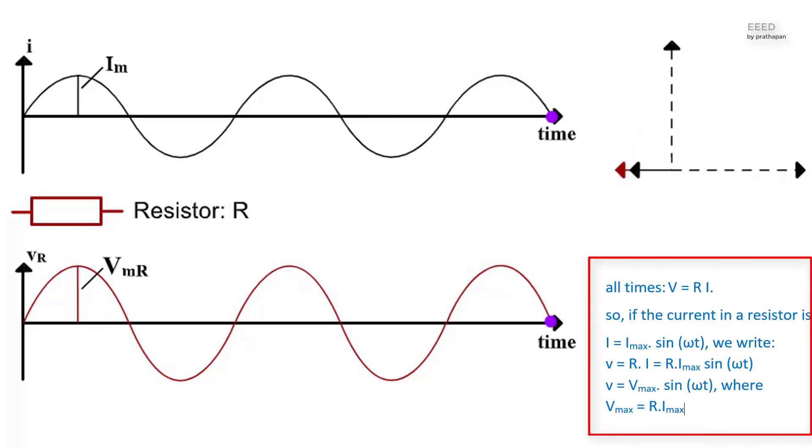Further, this is true at all times: V equals RI. So if the current in a resistor is I equals I max sin omega t, we write V equals R dot I equals R dot I max sin omega t. V equals V max sin omega t, where V max equals R dot I max.